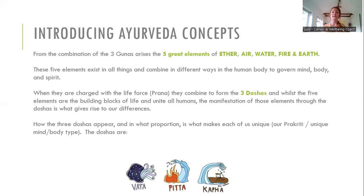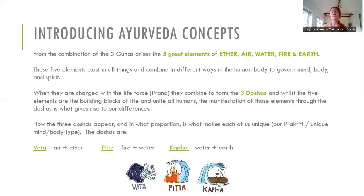These three Doshas appear in us and can appear in different proportions — this is what makes all of us different. Our Prakriti, our unique mind-body type or constitution, ultimately comes down to these three Doshas: Vata, Pitta, and Kapha. Vata is made up of the air and ether elements, Pitta of fire and water, and Kapha of water and earth. We all have all three Doshas within us, just in various amounts, and that's what makes each of us unique.